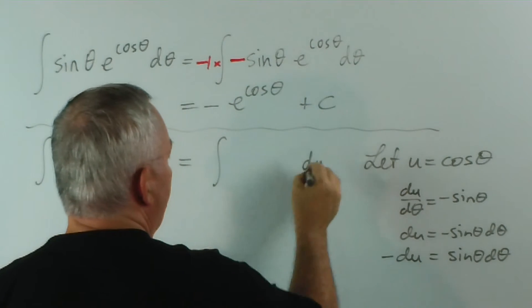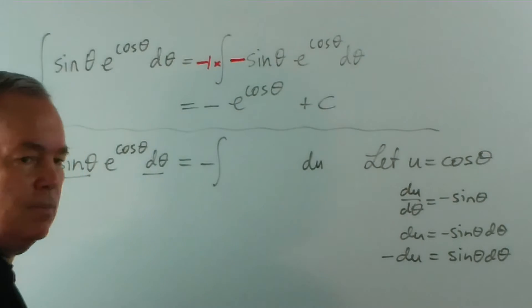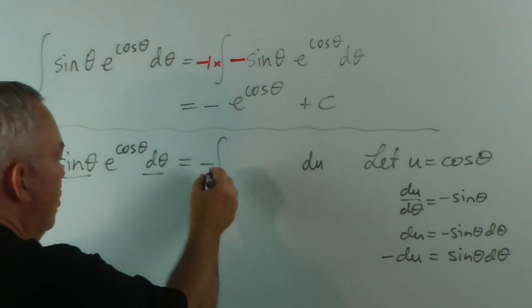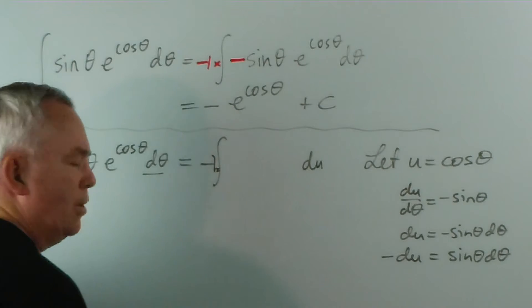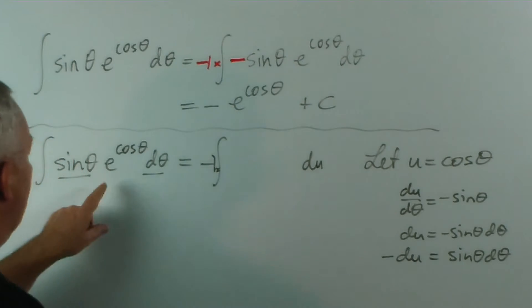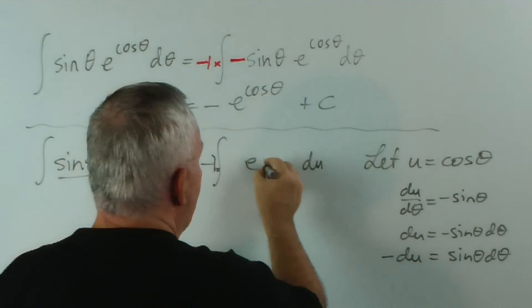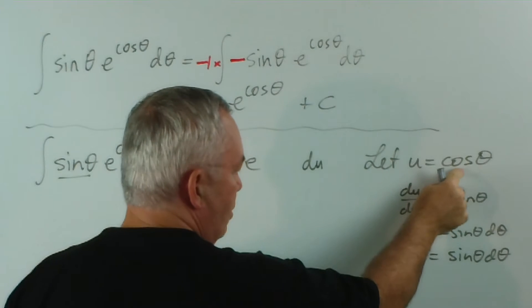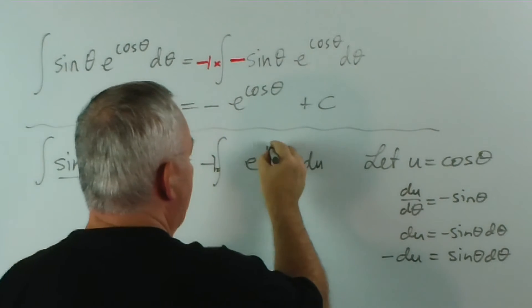And I'll leave a minus out the front because it's like minus one times. It's, if you like, minus one times. So it's a coefficient. And e to the cos theta is simply e to the u because u equals cos theta.